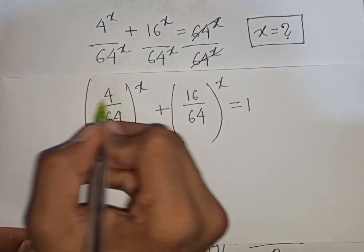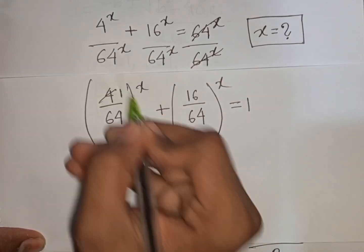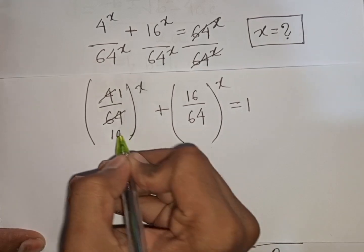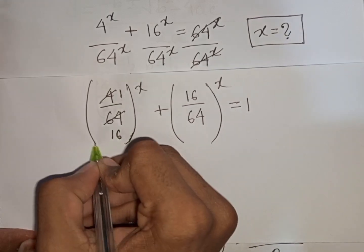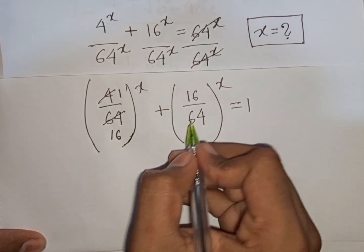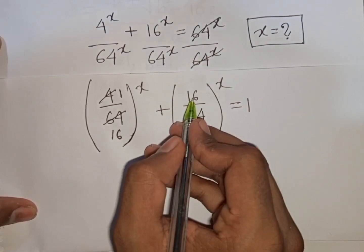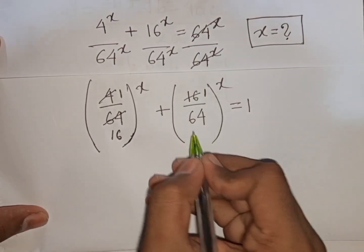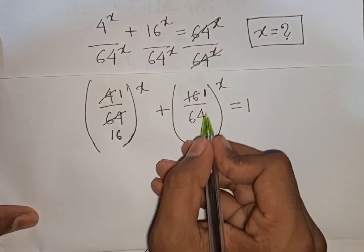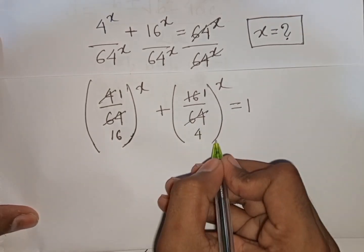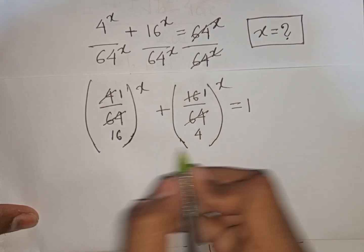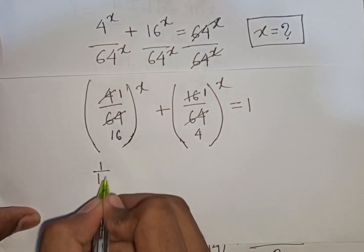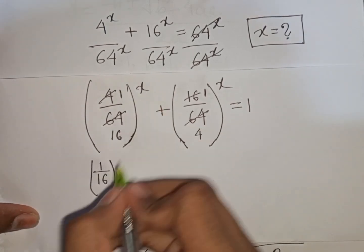Now 4 divided by 64 means it will be 1/16. And 16 divided by 64 means it will be 1/4. So we have (1/16)^x + (1/4)^x = 1.